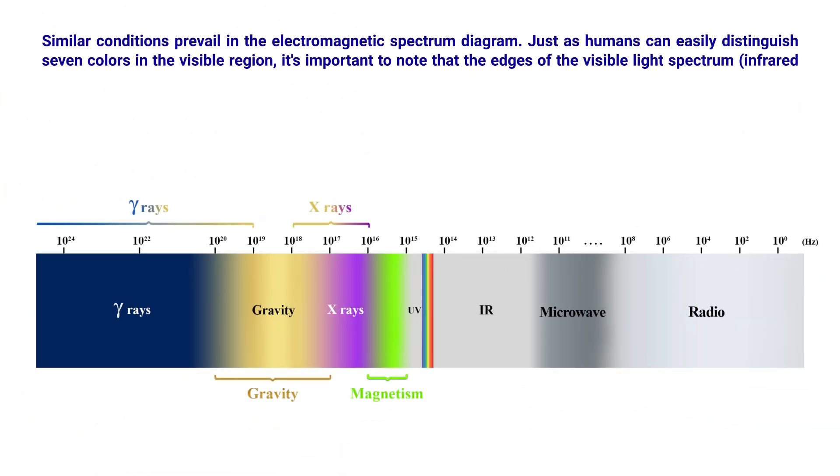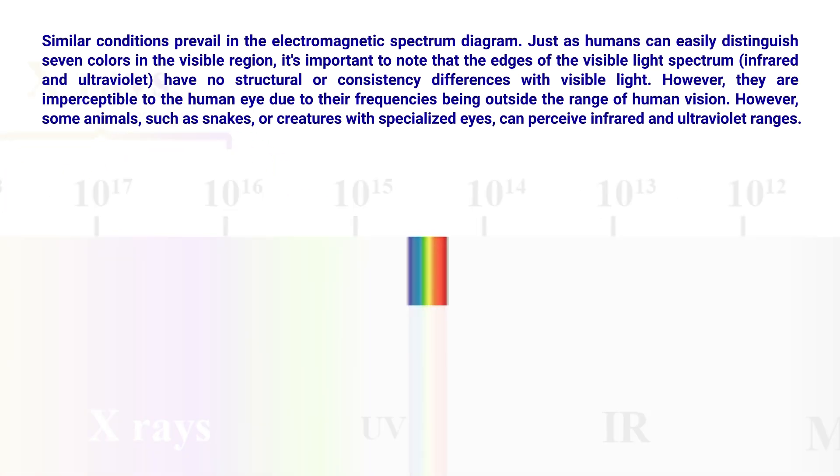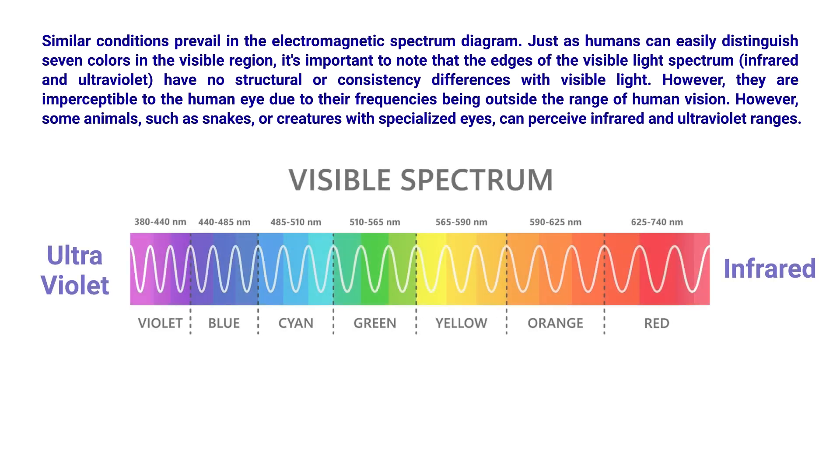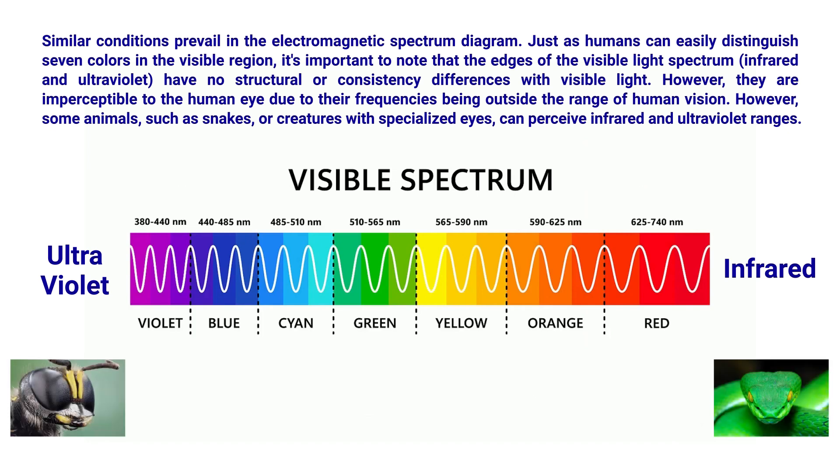Similar conditions prevail in the electromagnetic spectrum diagram. Just as humans can easily distinguish seven colors in the visible region, it is important to note that the edges of the visible light spectrum, infrared and ultraviolet, have no structure or consistency differences with visible light. However, they are imperceptible to the human eye due to their frequencies being outside the range of human vision. Some animals such as snakes or creatures with specialized eyes can perceive infrared and ultraviolet ranges.